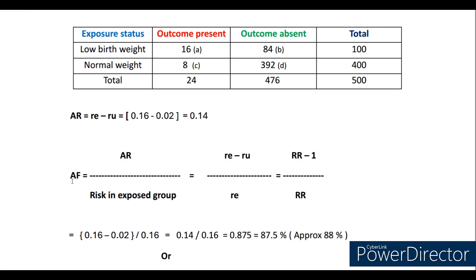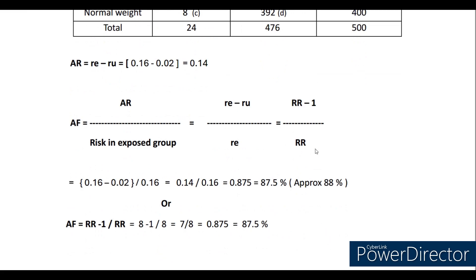To express attributable risk as a proportion, we use attributable fraction (AF). The formula is AR divided by risk in exposed: 0.14 divided by 0.16, giving approximately 88%. Alternatively, using relative risk: (RR minus 1) / RR = (8 minus 1) / 8 = 7/8 = 87.5%. You can calculate it either way.